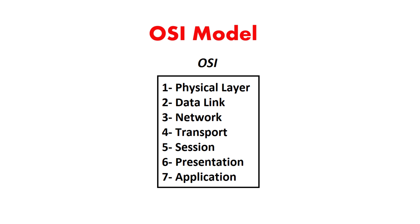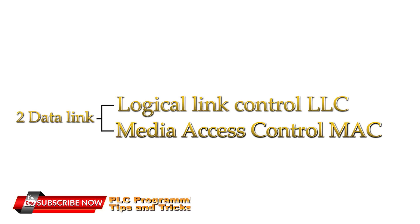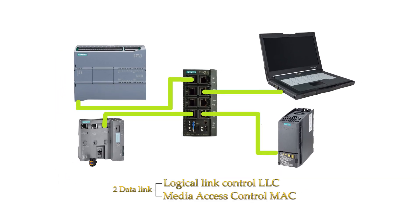Now we have finished the physical layer of Ethernet. The data link layer can be split into two separate sections: logical link control, or LLC, and media access control, or MAC. The LLC enables the path for data on the Ethernet to transmit between devices. The MAC uses hardware addresses assigned to network interface cards to identify the specific computer or device, indicating the source and destination for data transmission.